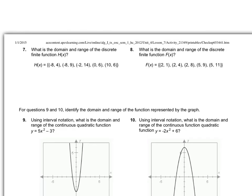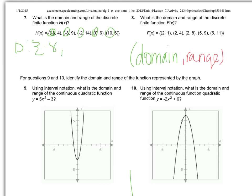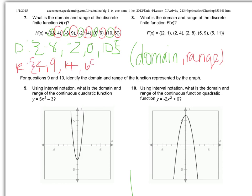For number seven, identify the domain and range of the discrete and finite function. The domain is on the left side — the x's — which would be negative eight, negative two, zero, and ten. Remember, we don't write negative eight twice just because it shows up twice. We put fancy brackets around those. The range is the numbers on the right side — the y's — which would be four, nine, fourteen, and six, also in fancy brackets.